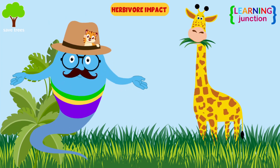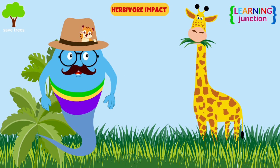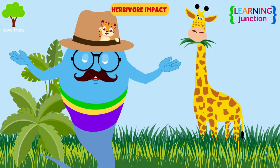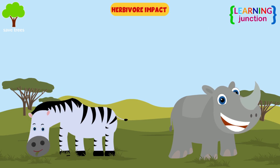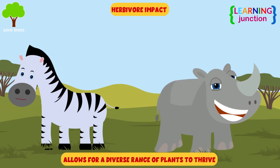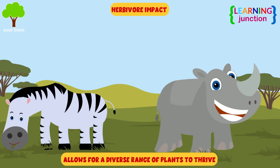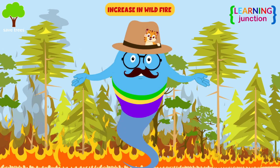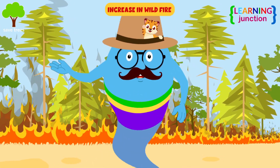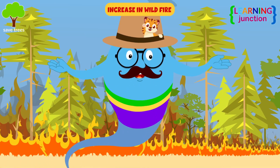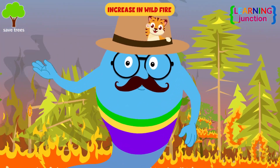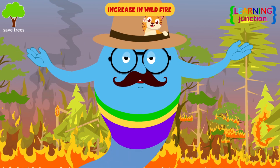Herbivore impact. Herbivores, or plant-eating animals, control plant populations by consuming vegetation. This prevents any one plant species from dominating, and allows for a diverse range of plants to thrive. Increase in wildfire. The disappearance of the animals would mean an increase in weeds and the concentration of biomass not consumed, increasing the risk and severity of wildfires.